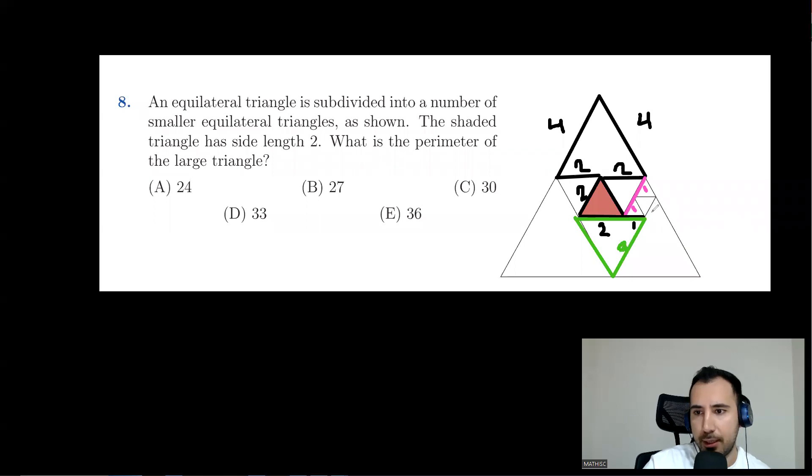And we know that this little green one is 1 for that reason. This is 4, this is 4, this is 4. And this pink one over here was supposed to be 1, right? So this is 1. That means each side is 9. We have three of them. 27 is the answer.